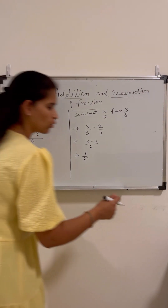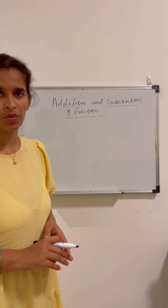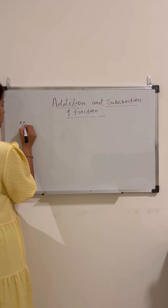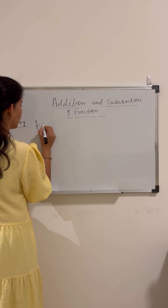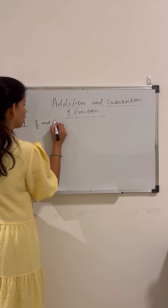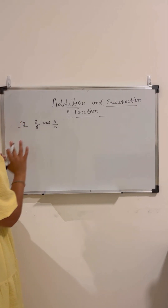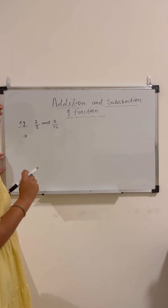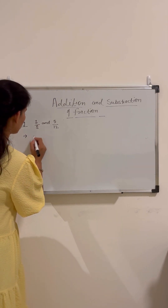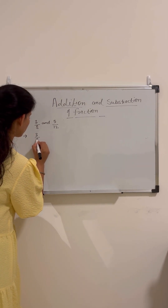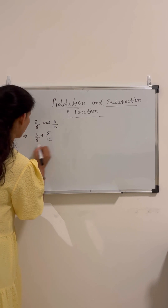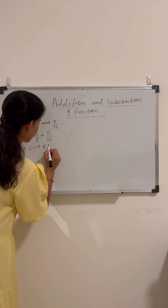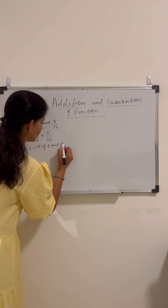Now we will learn how to solve unlike fractions — addition and subtraction of unlike fractions. Let us take one example: 3 by 8 and 5 by 12. We need to add these two fractions. First, these two are unlike fractions, so we need to convert them into like fractions. We will take out the LCM of 8 and 12, which is 24.